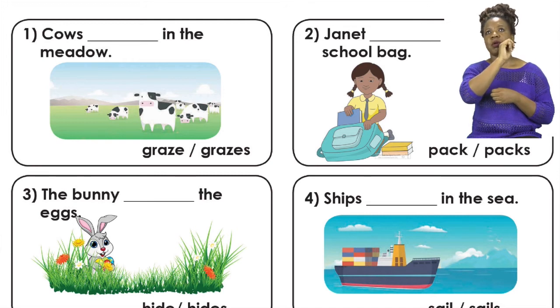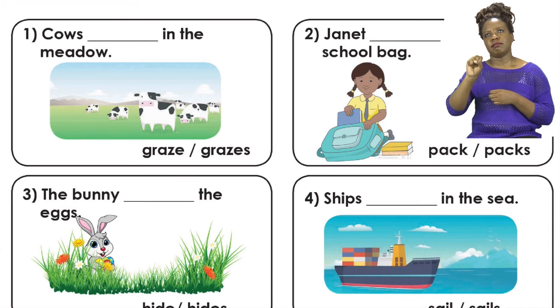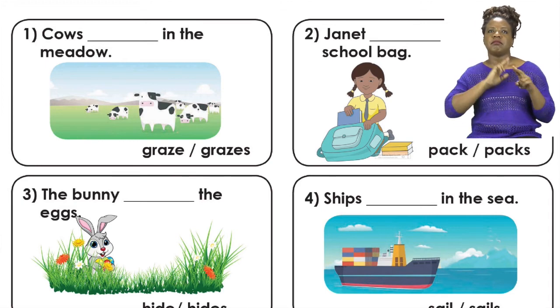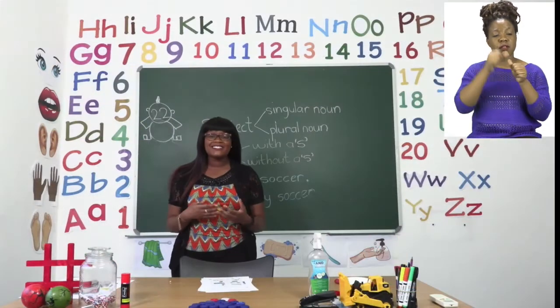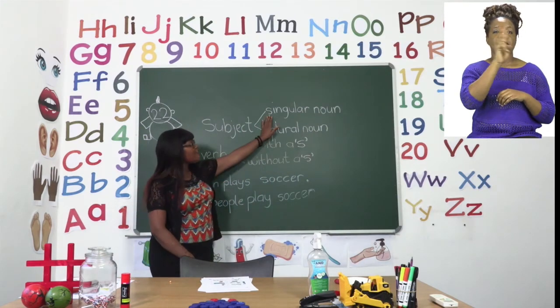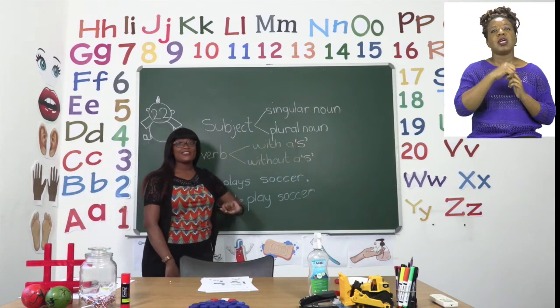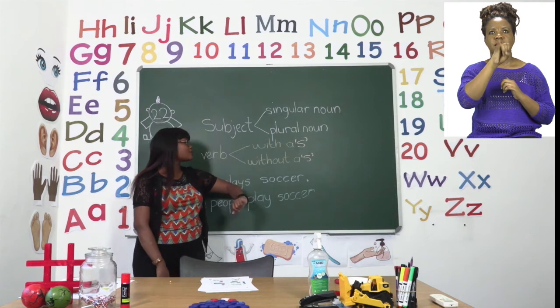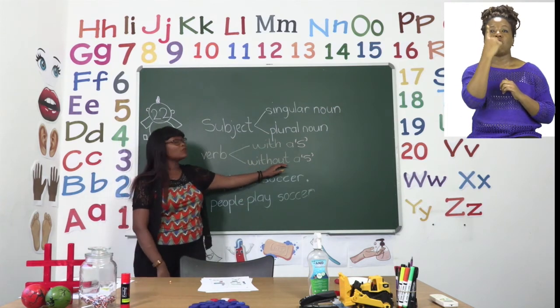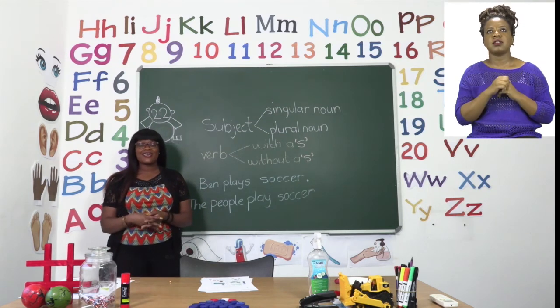Remember boys and girls, the verb always comes after the subject. That way it will be easy for you to identify the subject. So take your time. Remember the rule about the subject verb agreement. That every time we have a singular noun, we have to use an S. And then when we have a plural noun, we have to remove or not have an S. Have fun with the exercise.